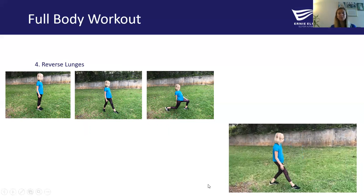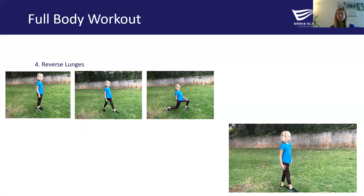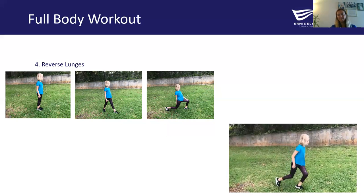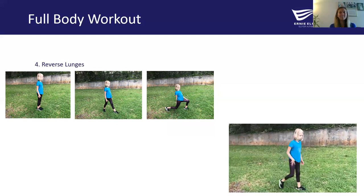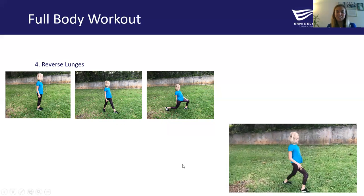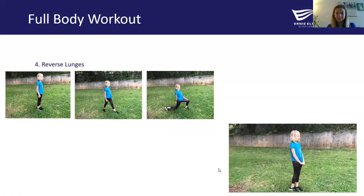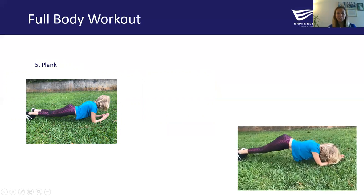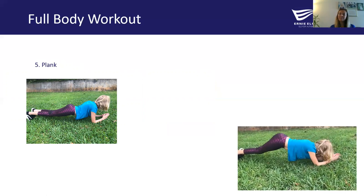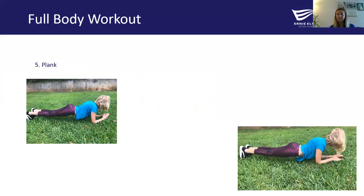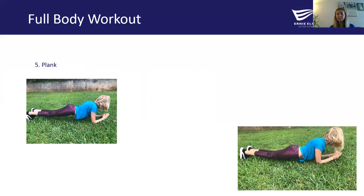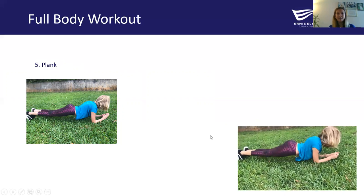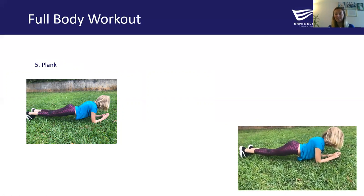Exercise four is our reverse lunges — alternating which leg steps back, lowering, and then as we rise back up, we bring our legs back to the starting position. Pause the video, do our lunges for 30 seconds. We've got one more exercise for round two. Our last exercise for round two is our planks — making sure our hips are parallel to the ground, neck is neutral, shoulders aren't going past the elbows, and we're engaging our stomach, our abdomen, our core. Pause the video, do our planks for 30 seconds, and then we are done with round two. Great job.